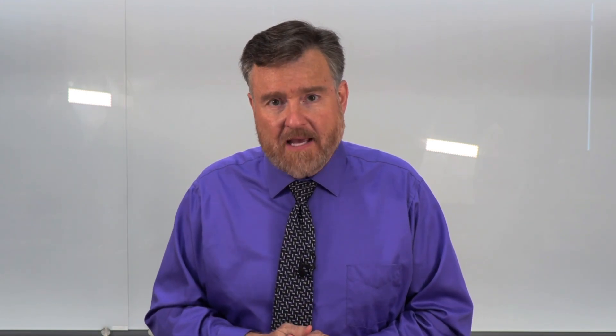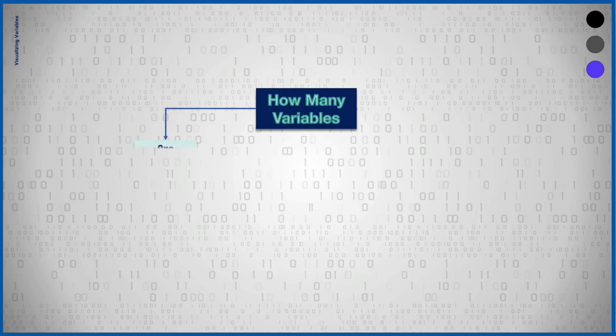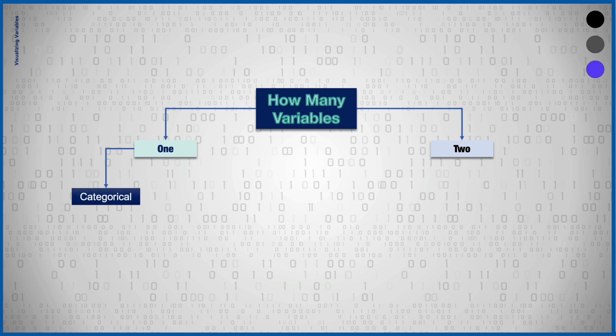First, consider how many variables you are trying to display. Do you have one variable, or are you trying to display two variables at a time? If you have one variable, you should consider the level of measurement. Is it nominal and ordinal — which would be categorical data — or is it interval or ratio quantitative data? Remember that quantitative is also called scale-level data.